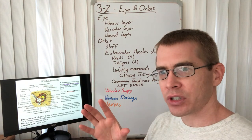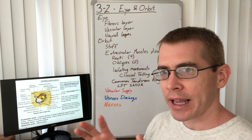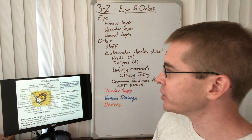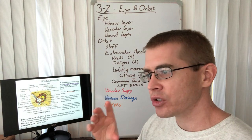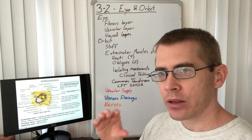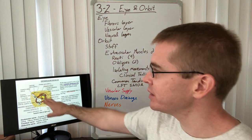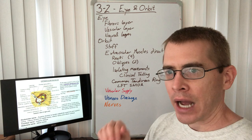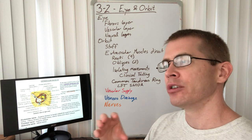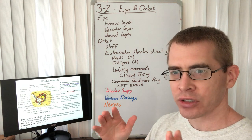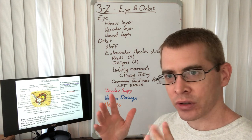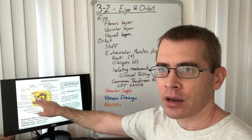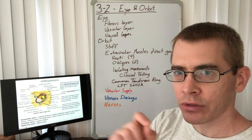All extraocular muscles attach within the orbit, and all except the inferior oblique attach in the posterior orbit. Most of the recti muscles attach to a common tendinous ring in the posterior orbit. This ring creates a bottleneck — some nerves entering the orbit travel within the ring and some outside it, allowing clinicians to differentiate intraorbital from intracranial lesions.